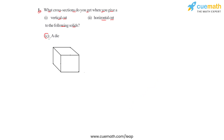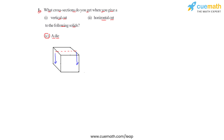Next we have a die, which is a cube-shaped solid. If we cut the die vertically along this dotted line, the die is divided into two parts, and the cross section represents a square.